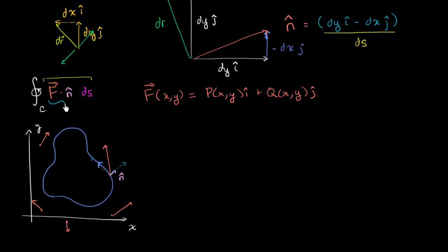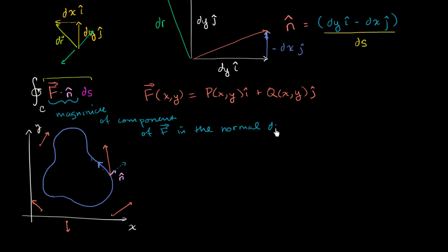Since you have a unit normal vector, what this is essentially going to give you is the magnitude of the vector field F that goes in the normal direction. So the component of F in the normal direction — this expression gives us the magnitude of the component of F in the normal direction. And then we're going to multiply that times a very infinitely small length of our contour right around that point. So you might say, okay, I kind of get what that is saying, but how could this ever be physically relevant?